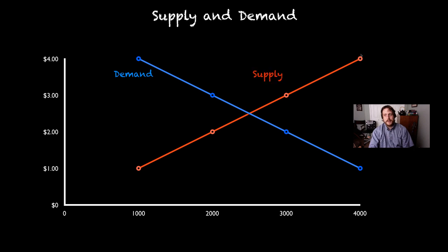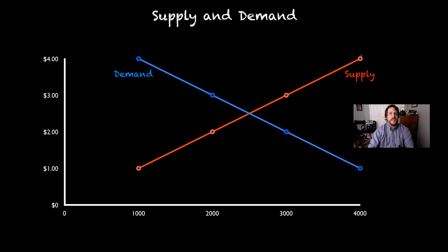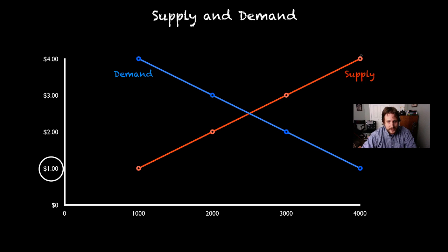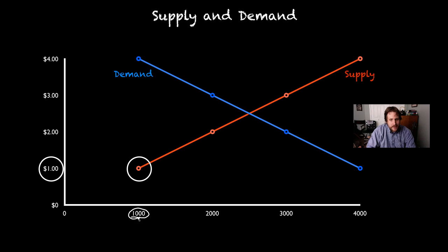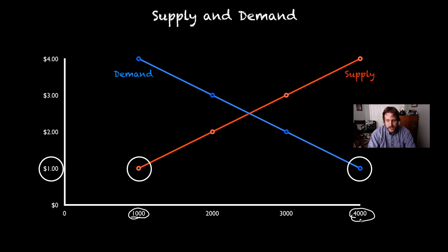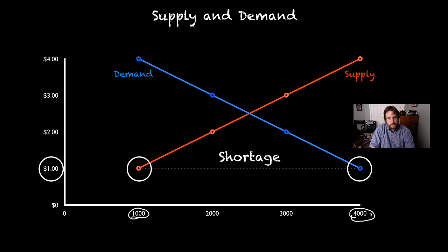Here we've got our demand and supply curves, and when we put them on the same chart we're able to use that to look at some really interesting things. Let's say Brussels sprouts are put on the market for a dollar — stores charge a dollar per pound. At that level, farmers are willing to produce a thousand pounds of Brussels sprouts, but people are demanding four thousand pounds of Brussels sprouts. So what we have here is a shortage.